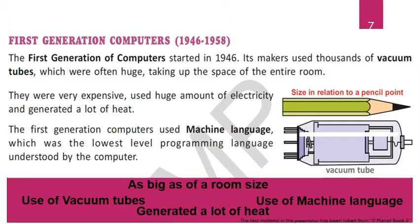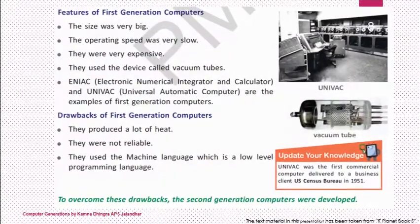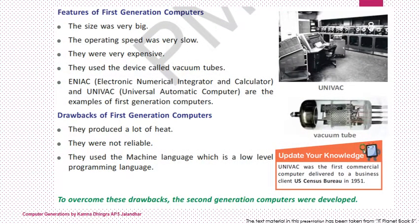The term vacuum tubes may be new for you, but in the last slide you will find definitions of the new terms used in this presentation. First generation computers were too big and operating speed was very slow. They were very expensive. Examples of first generation computers are ENIAC and UNIVAC — you can see the picture here. Drawbacks include that they produced a lot of heat and were not reliable.